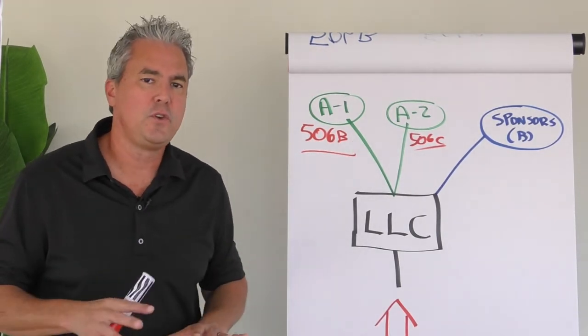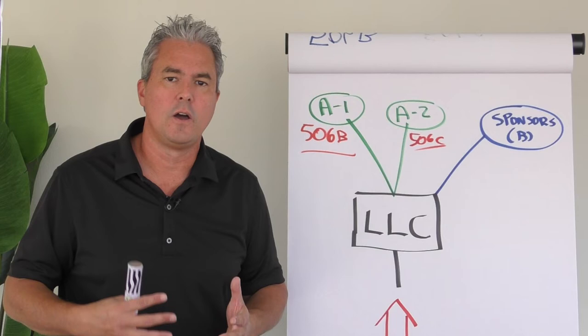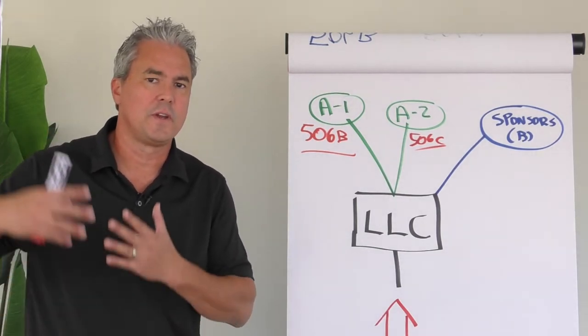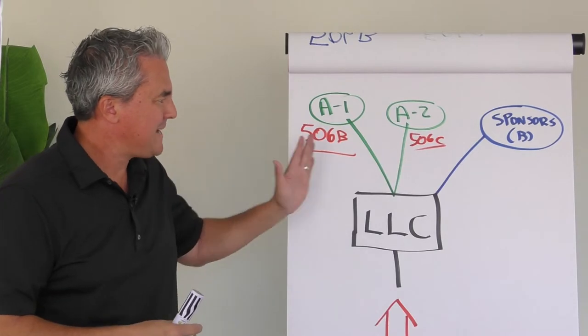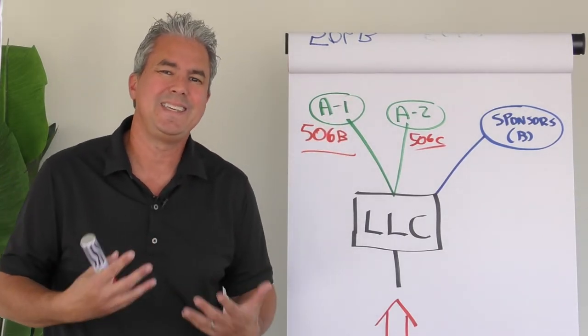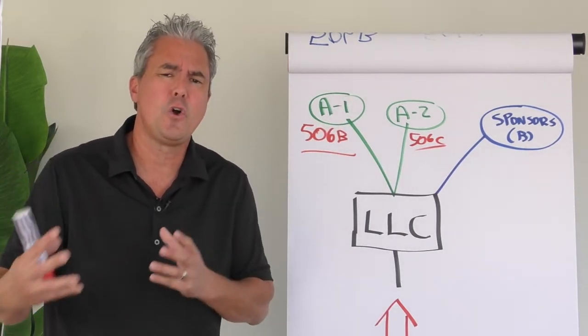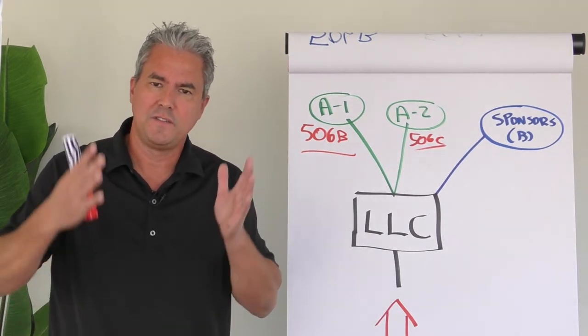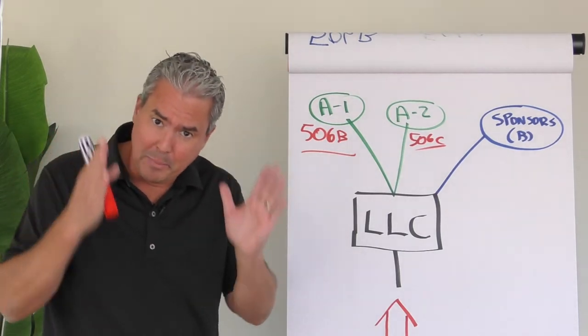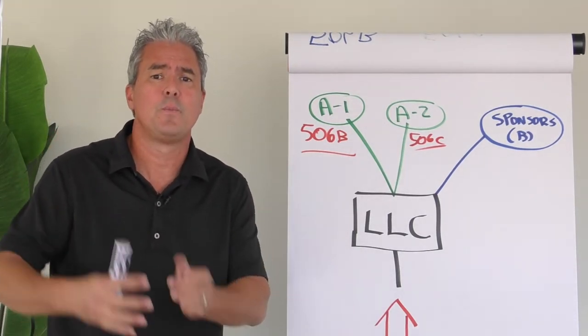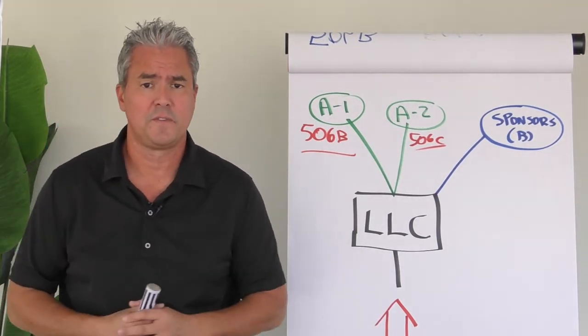This way, there's absolutely no confusion of which exemption we were relying on when somebody maybe heard your offering on a podcast or saw it on a social media post. So making the distinction early on makes it really easier for us to show that we didn't co-mingle these two offerings, because that's probably the biggest danger. You've got to make sure that when you're doing the 506B, you're complying fully with 506B, and when you're doing the C, you're complying fully with 506C.